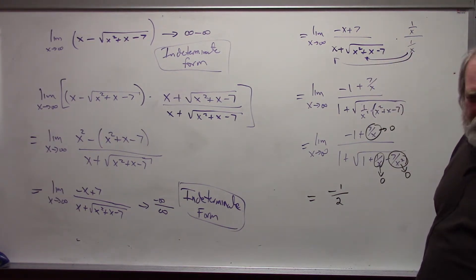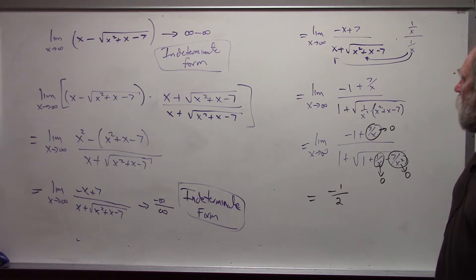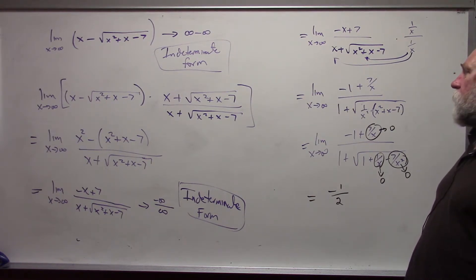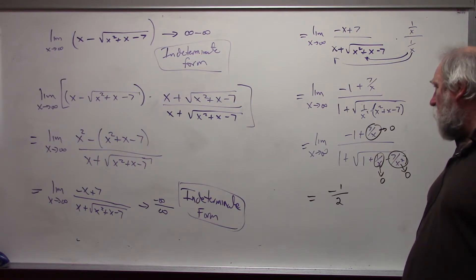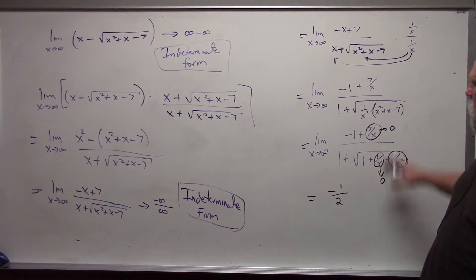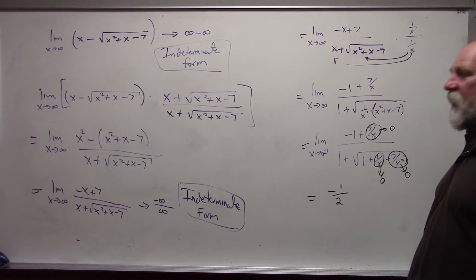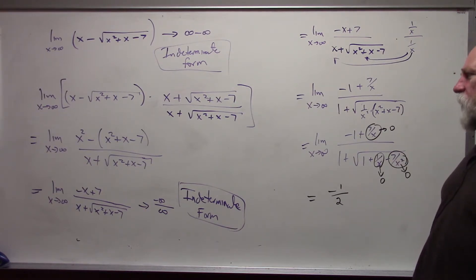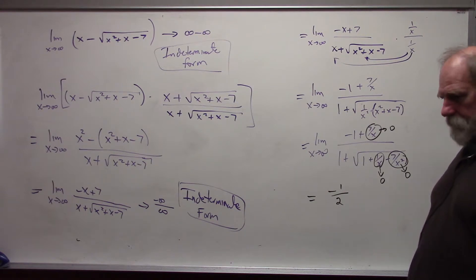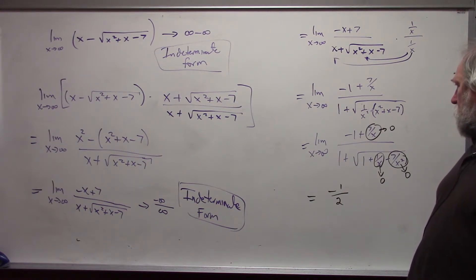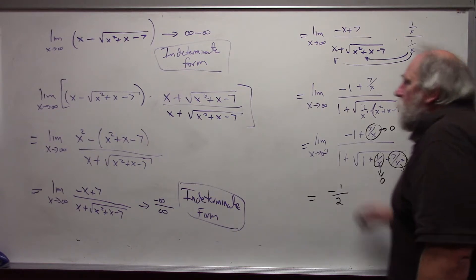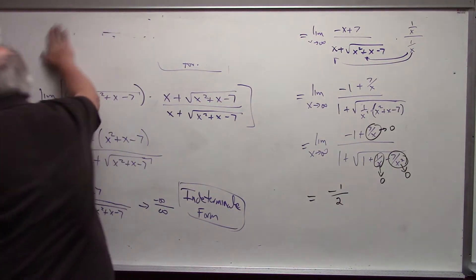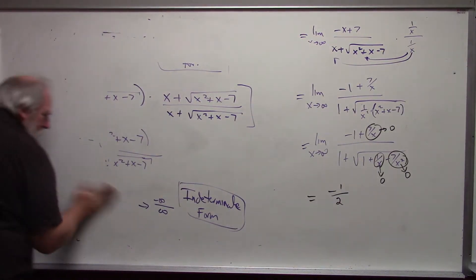The basic rule to follow: always multiply by 1. When dealing with an infinity over infinity form, multiply by 1 over the largest power of x in the denominator.